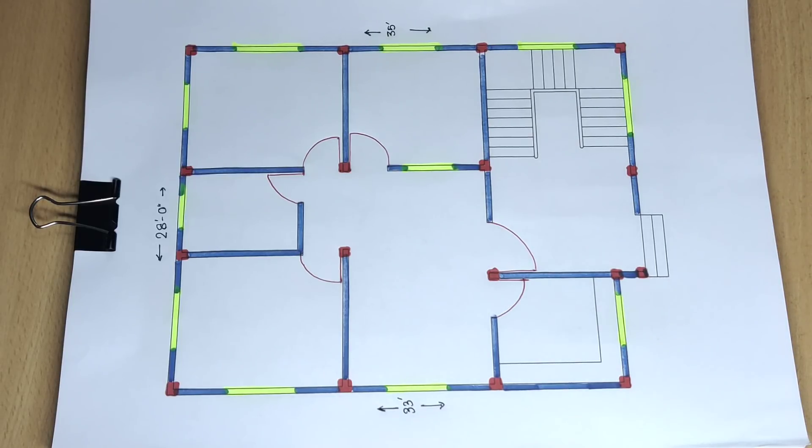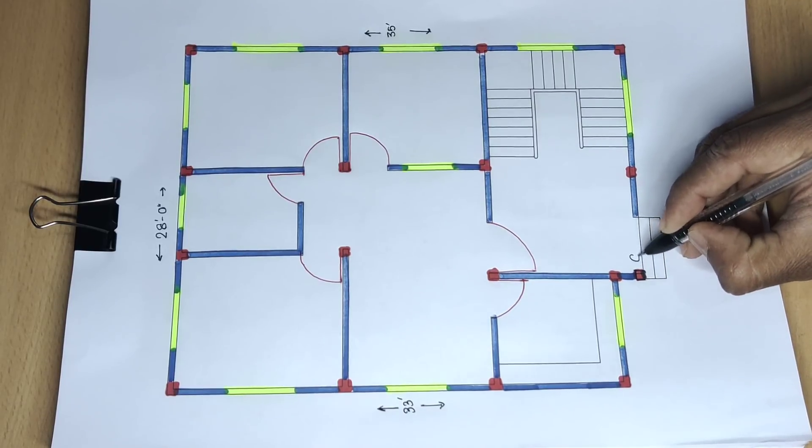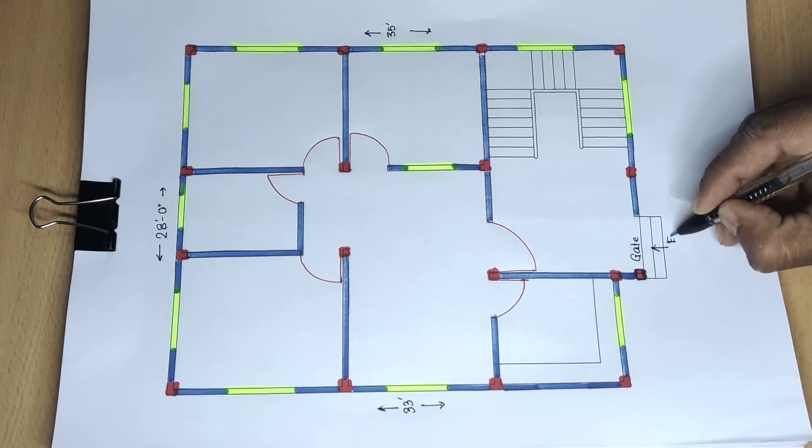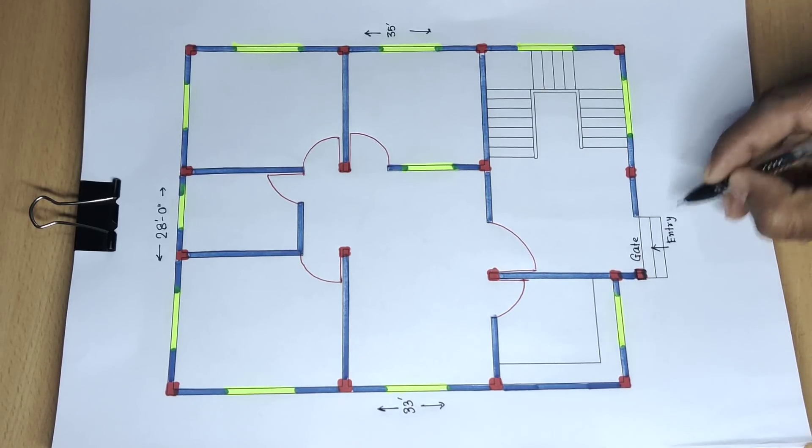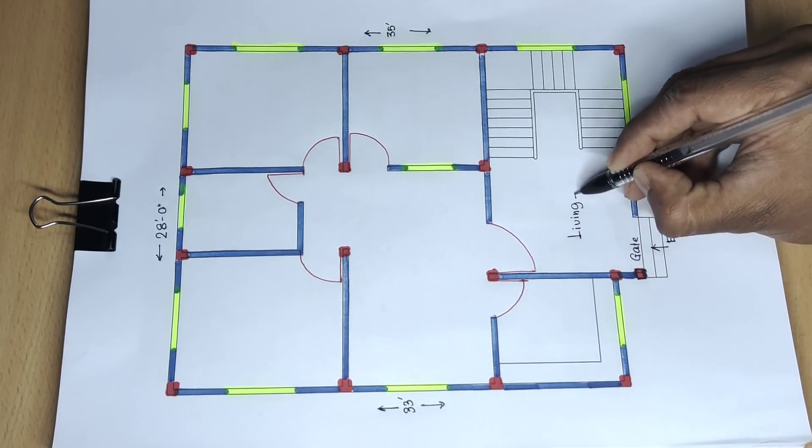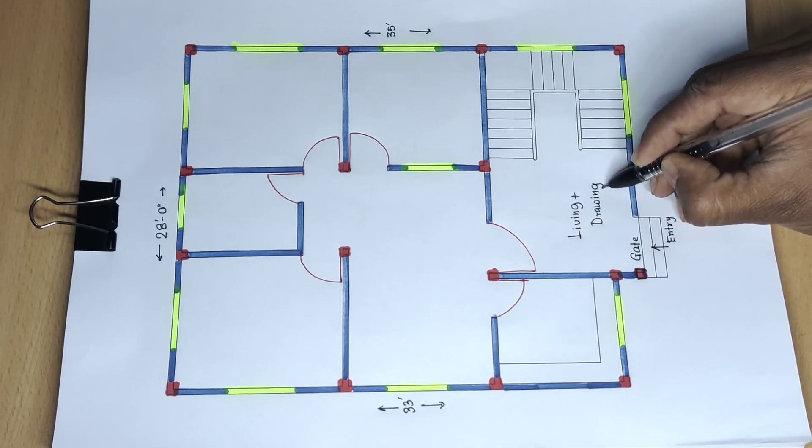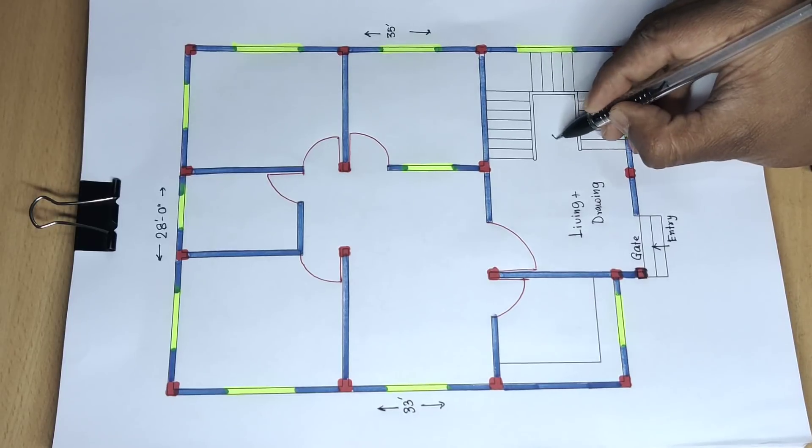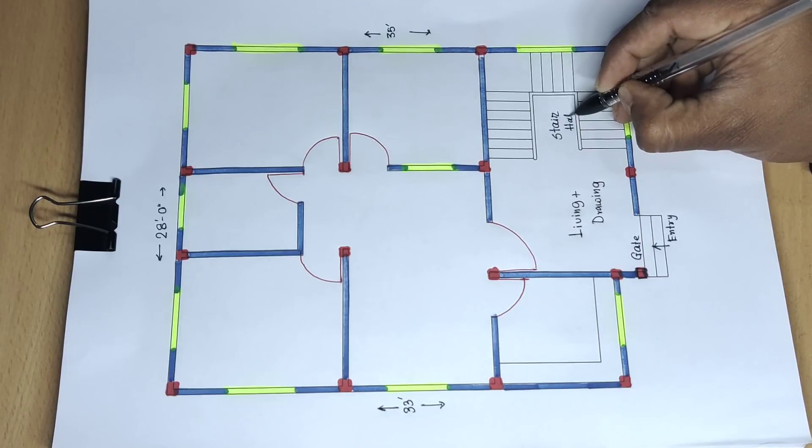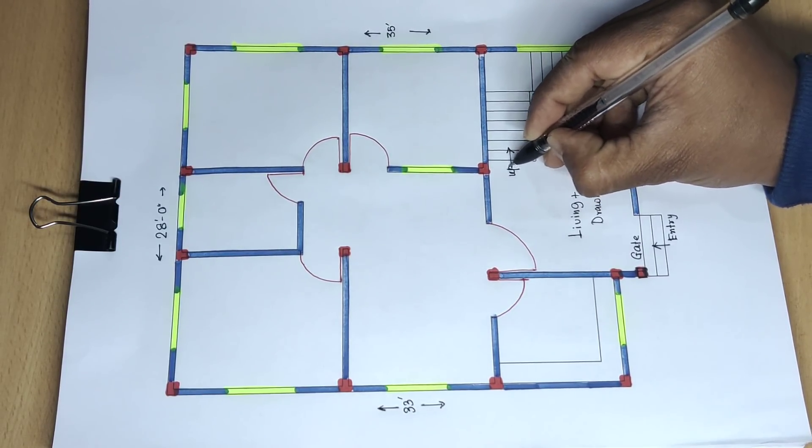Now starting this plan. This is the column at the entry, the drawing area. Here we have the stair area, stair hall with stairs going up.